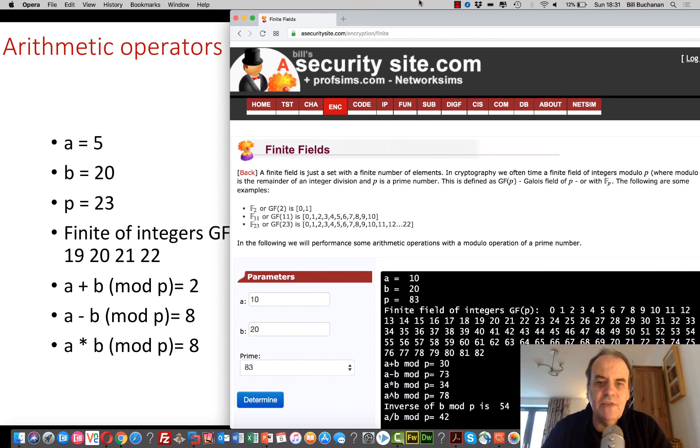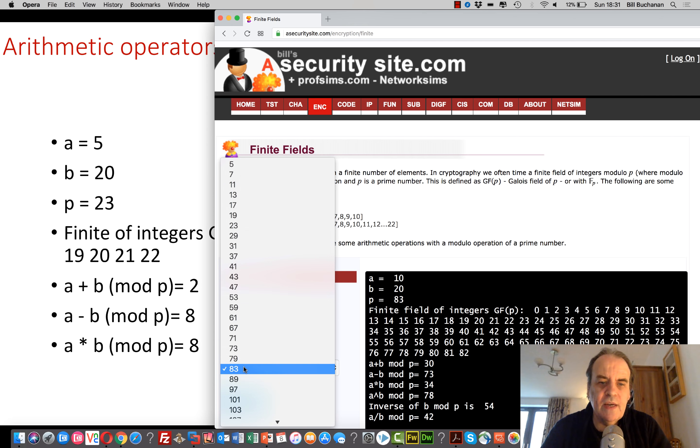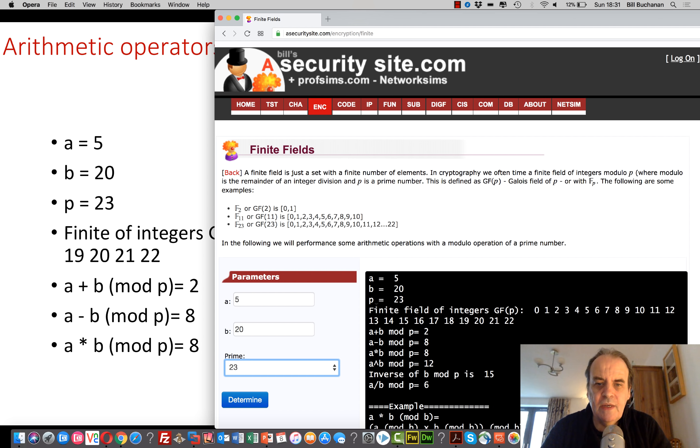So this is our little page here that we can just check. We'll take 5 and 20 and we'll take a prime number of 23 and we'll just check our results here. 2, 8 and then 8. To the power of, a to the power of b, 5 to the power of 20, we take mod of p and we end up with 12 here.